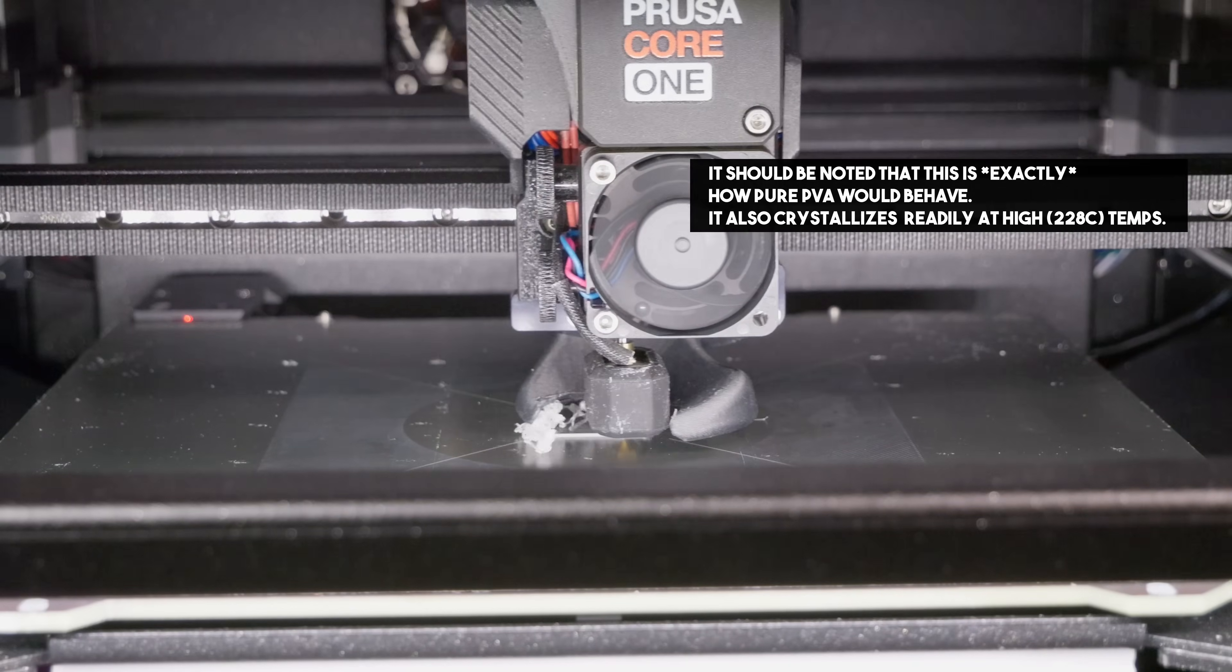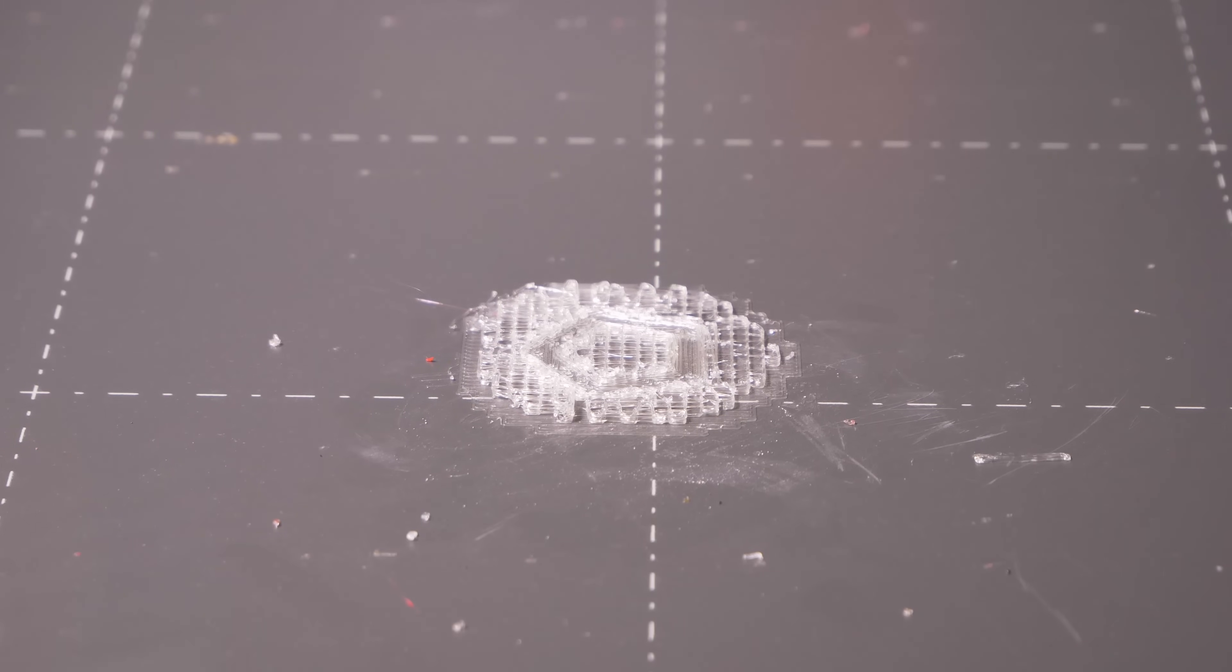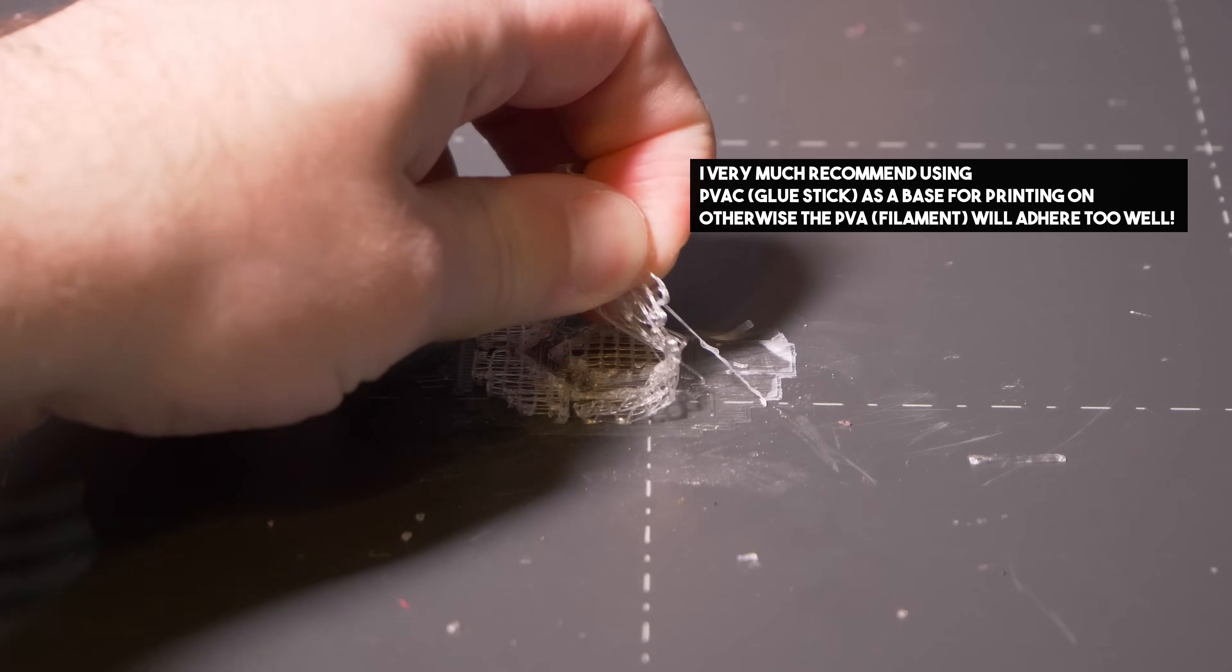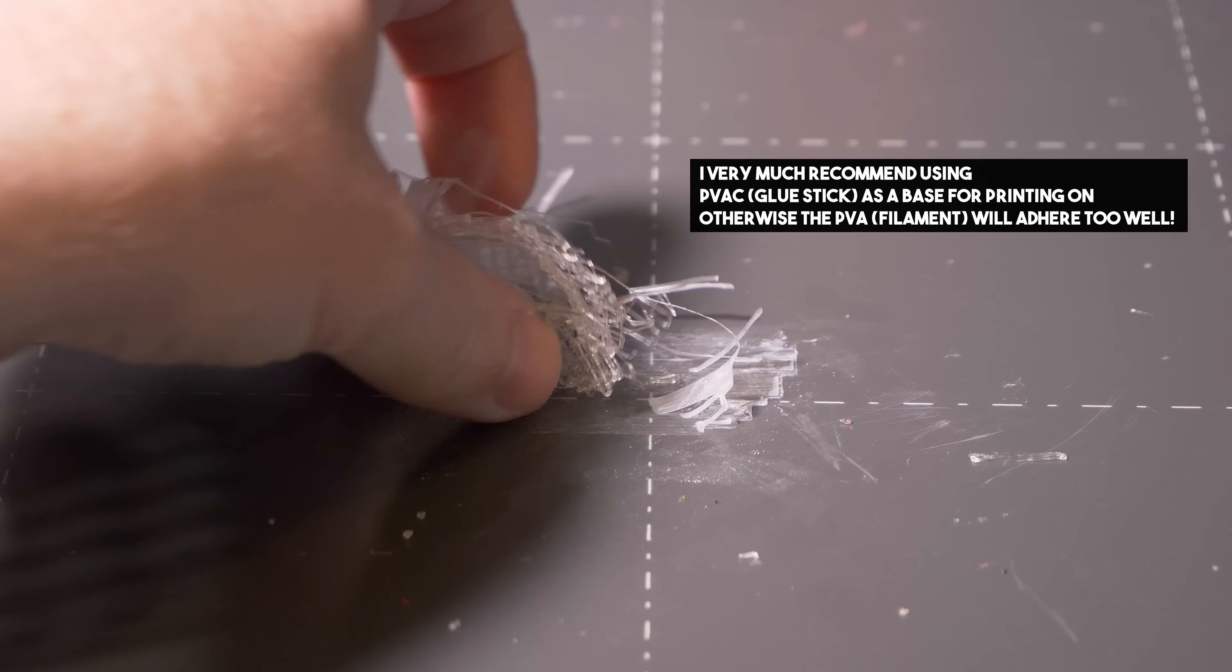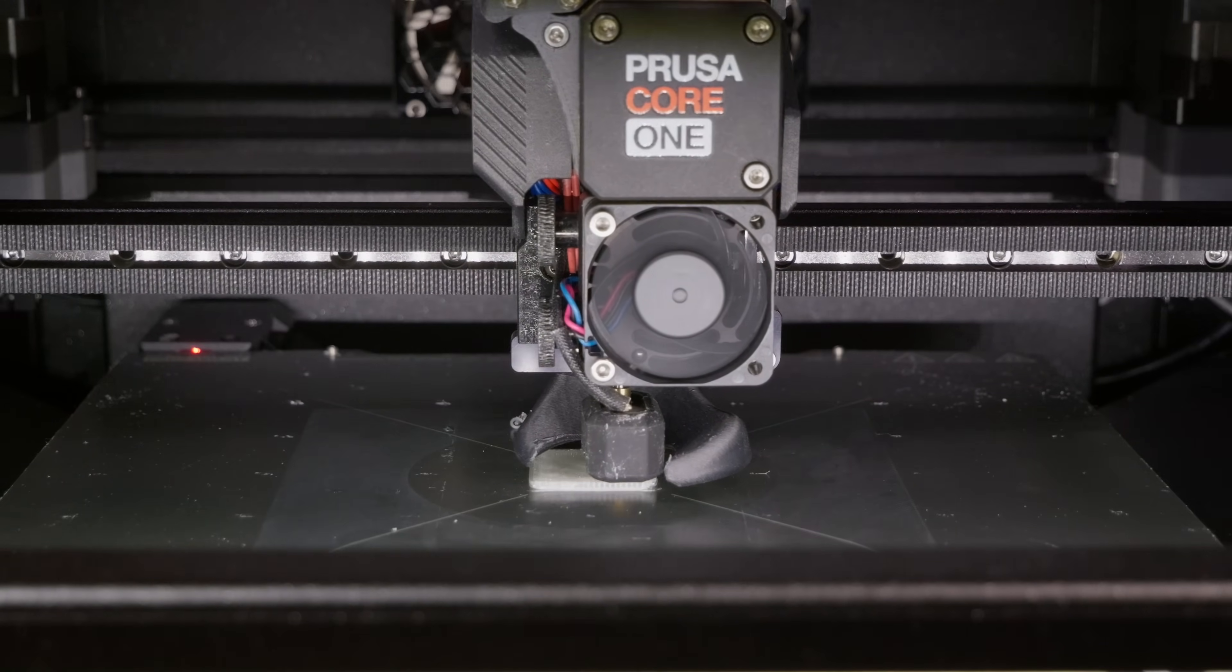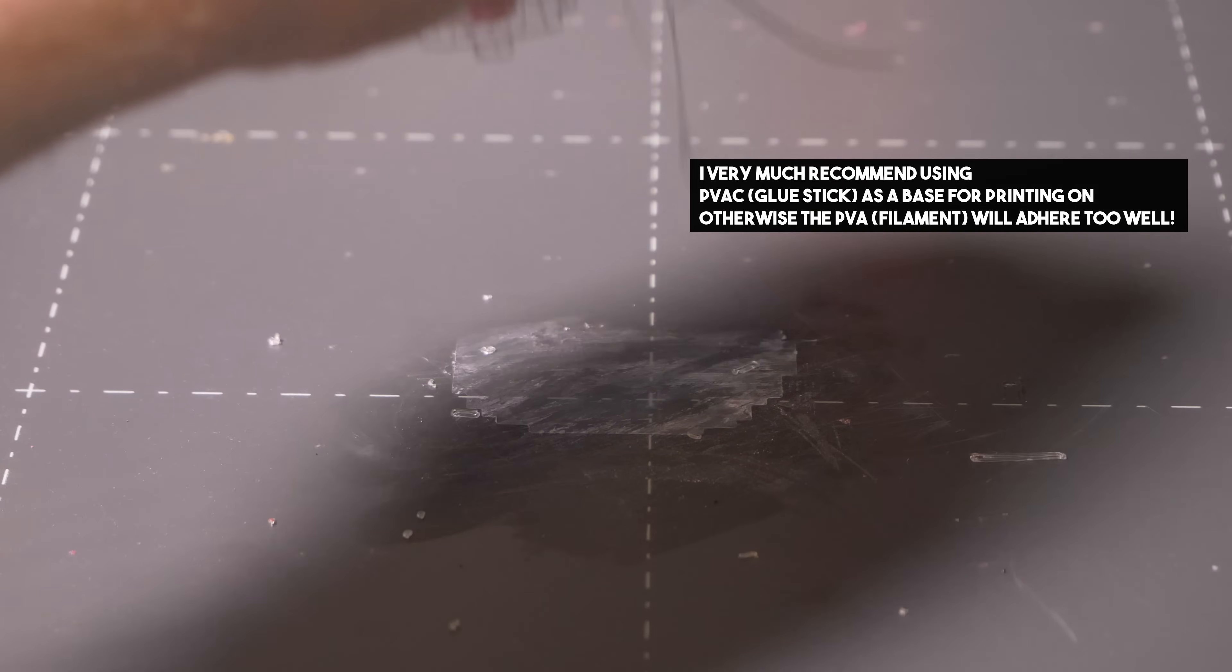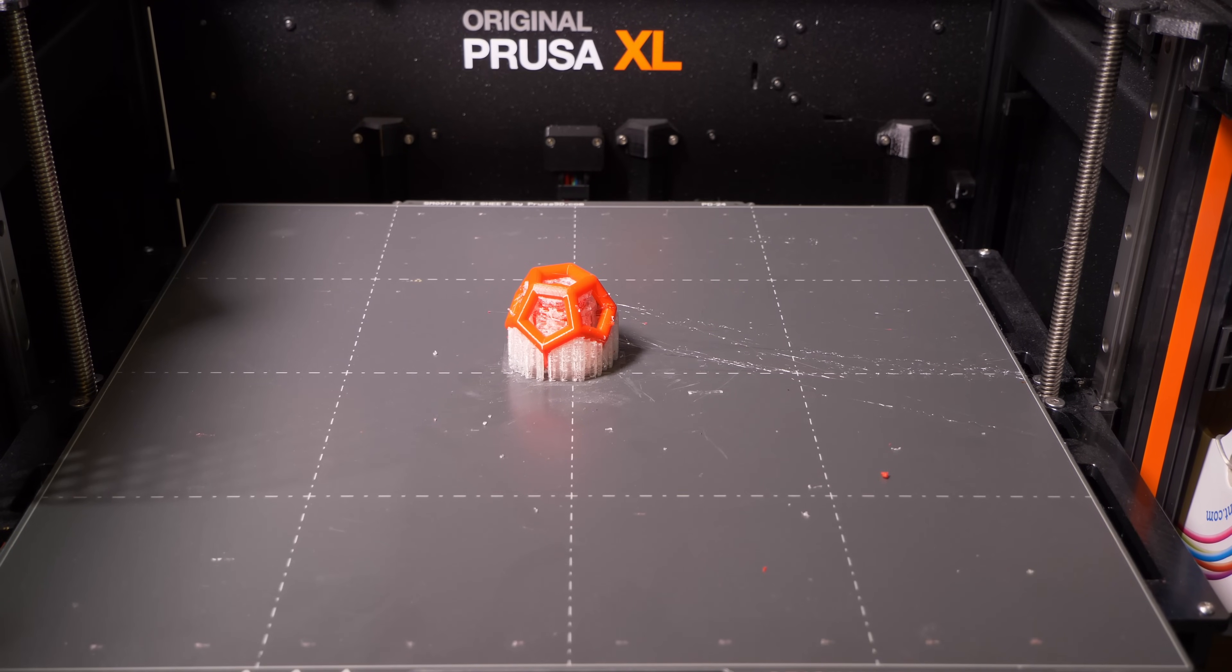It holds the title of being the only filament so far that's managed to outright block the Prusa Core 1 during normal printing. You can print it on a normal printer, of course, with the right parameters. And once I did set those parameters, effectively slowing it down and slowing the retraction speeds down, it's really brittle, so it will crack in the actual extruder gears if you let it, so you have to go really slow with it. Once you do that, it will print fine on a normal printer, but you have absolutely no hope, I think, of getting this to work on something like an AMS system. You really need to have an IDEX or a multi-tool printer like the Prusa XL, which is what I printed it on for the tests.